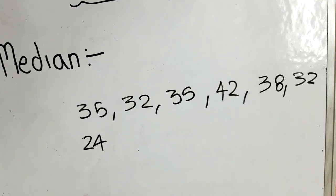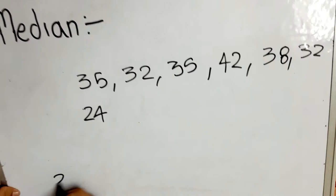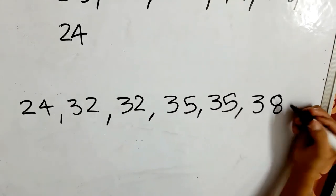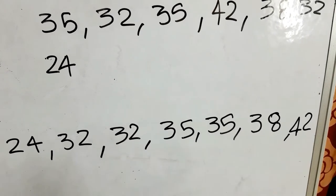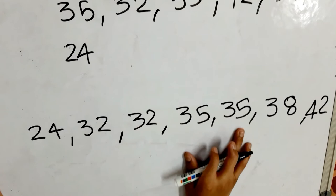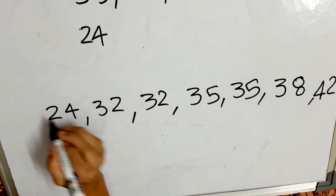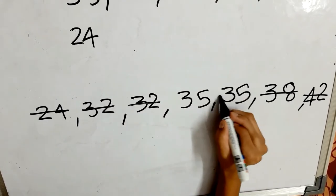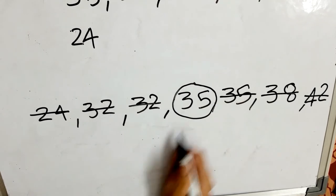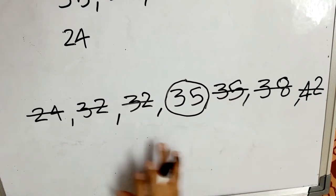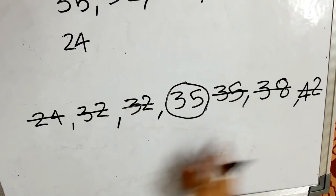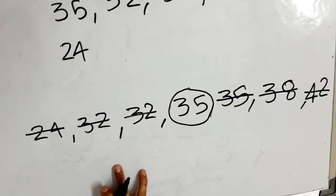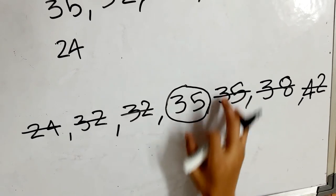Now arrange it in ascending order. As you can see, I arranged it in ascending order. Then just go on cutting numbers from both ends to find the median. Here 35 is our median. The number of observations is 7, which is an odd number, so it is easy to find the median. The fourth occurrence is our median.